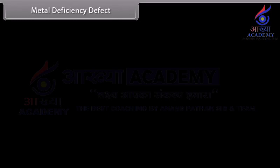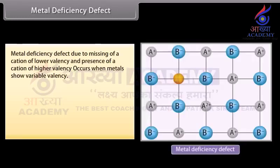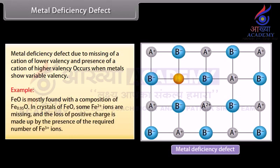Metal deficiency defect occurs due to missing cations of lower valency and the presence of cations of higher valency. It occurs when metals show variable valency. For example, FeO is mostly found with a composition of Fe₀.₉₅O. In crystals of FeO, some Fe²⁺ ions are missing and the loss of positive charge is made up by the presence of the required number of Fe³⁺ ions.